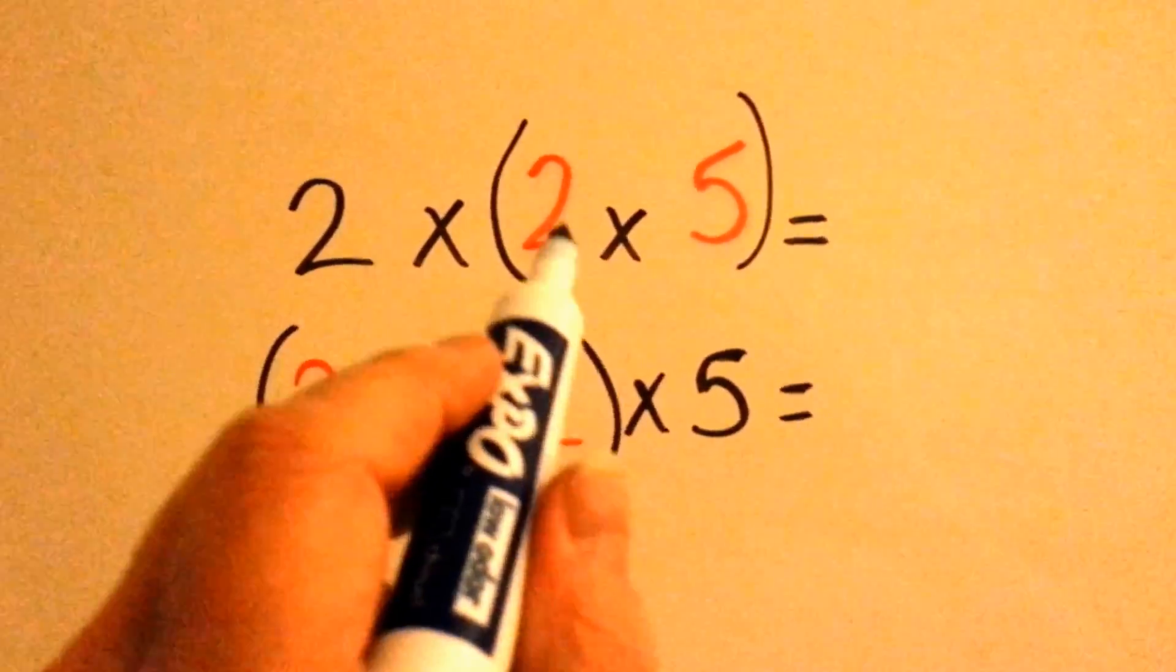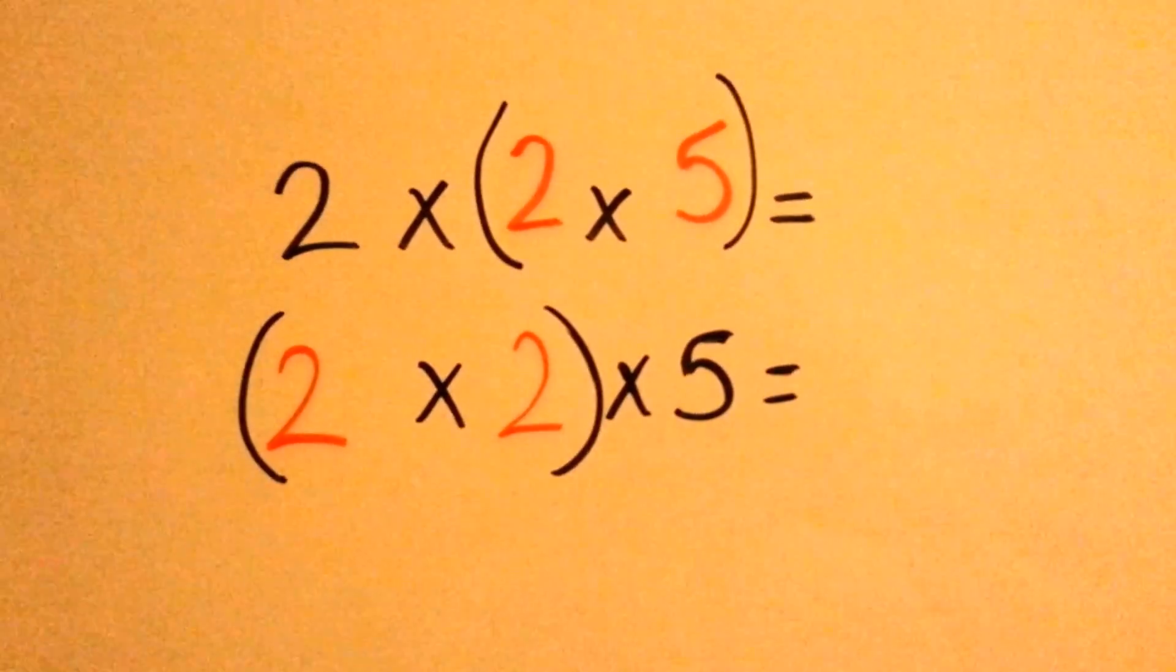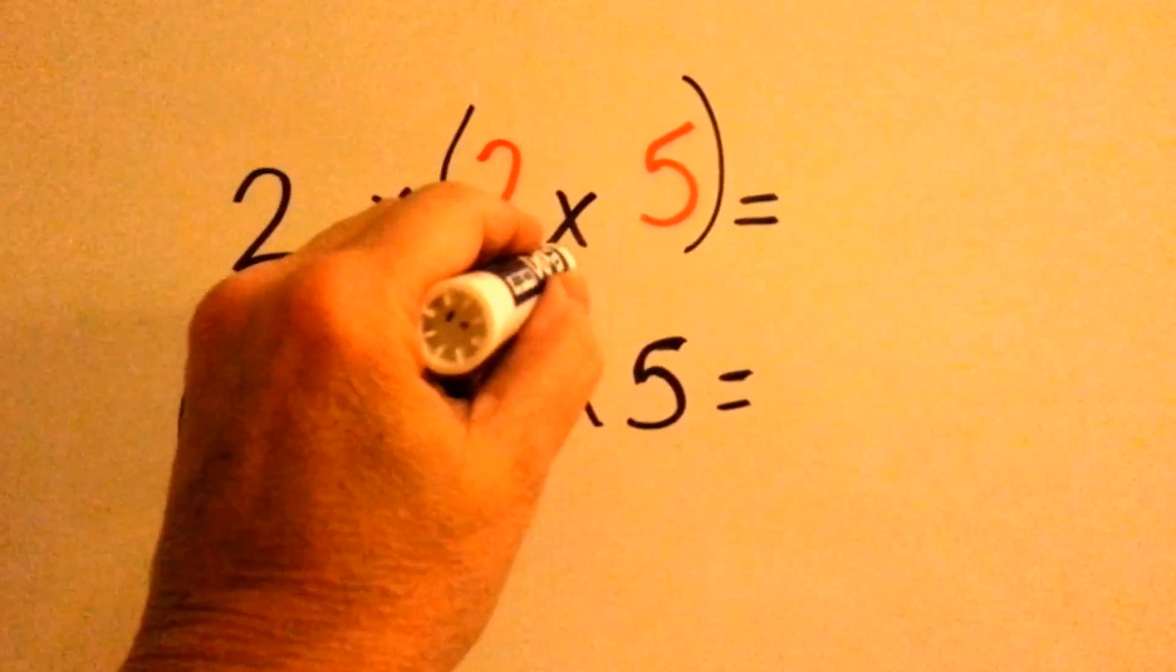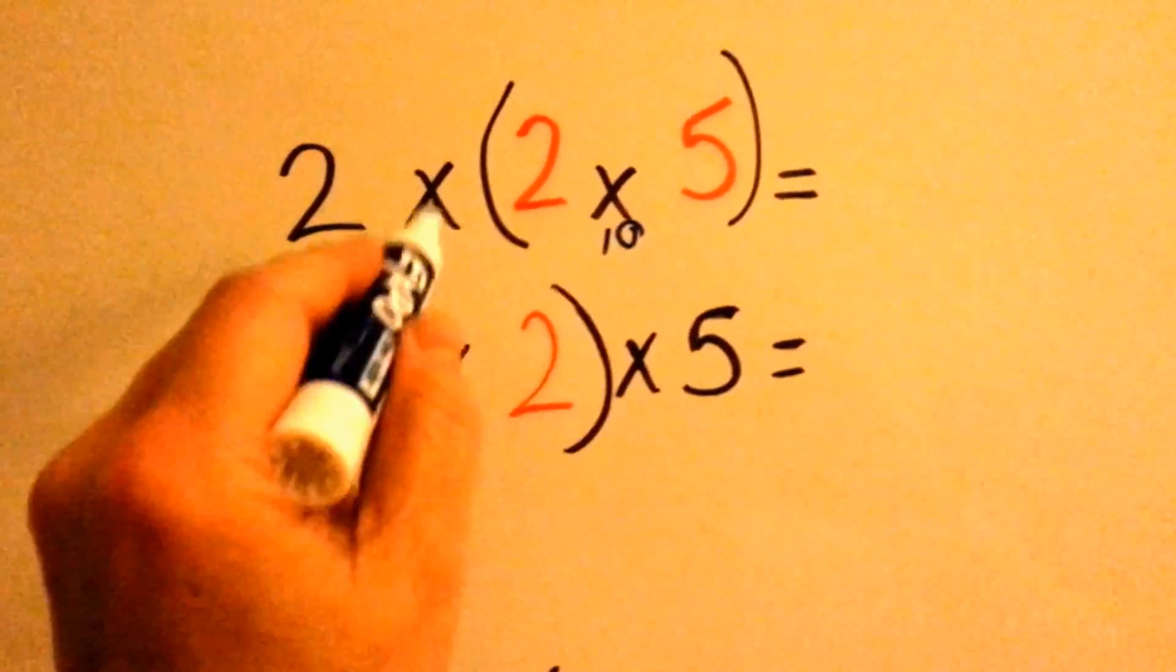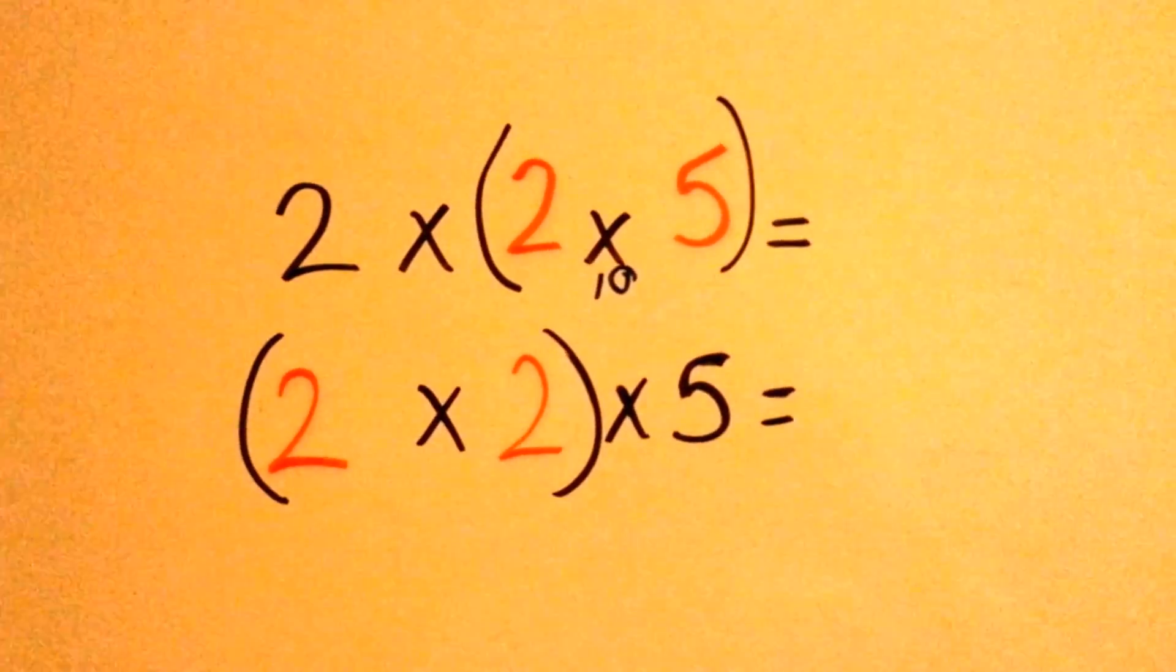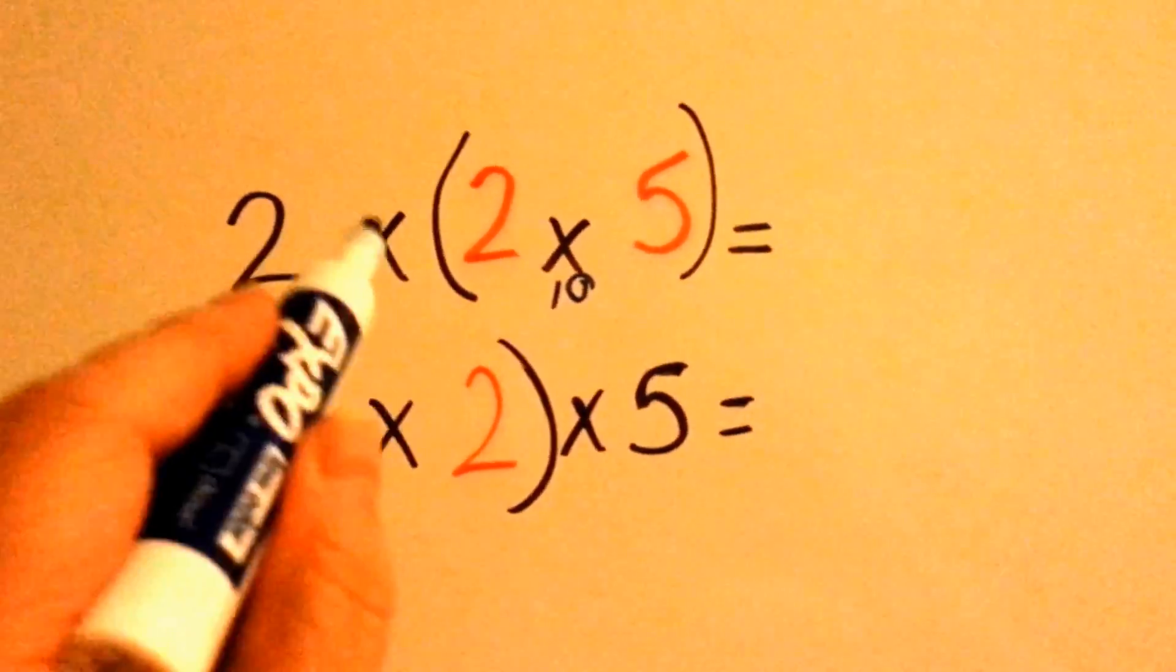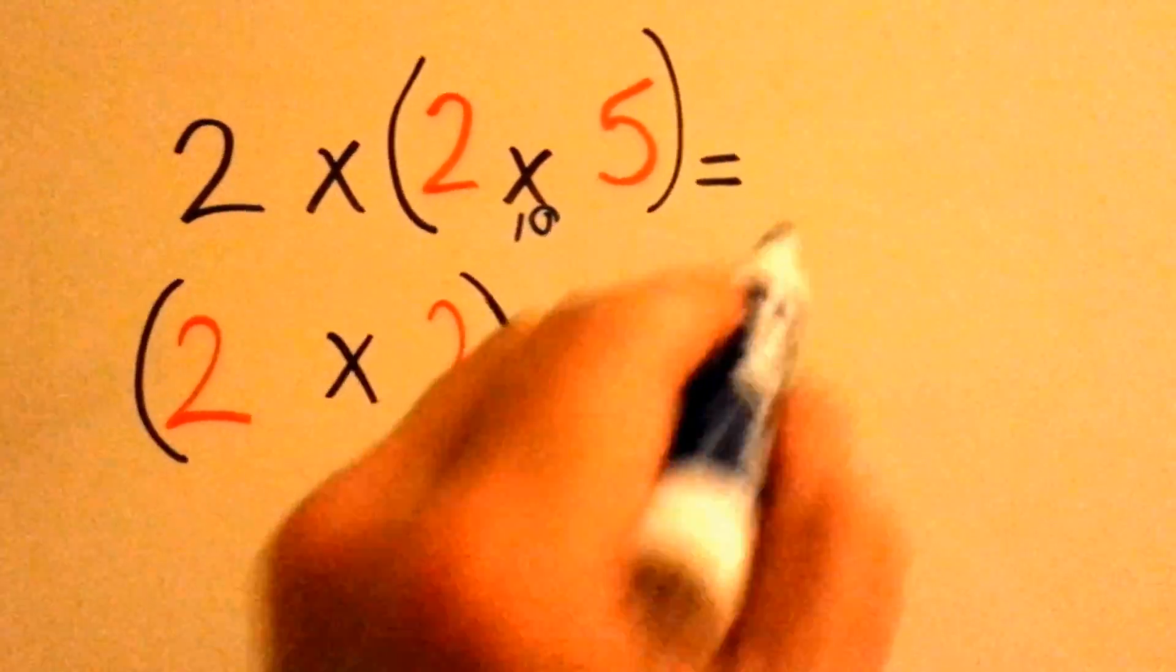Let's try another one. Parentheses first, what's two times five? Two times five is ten. What's ten times two? Or two times ten, do you know? It's twenty.